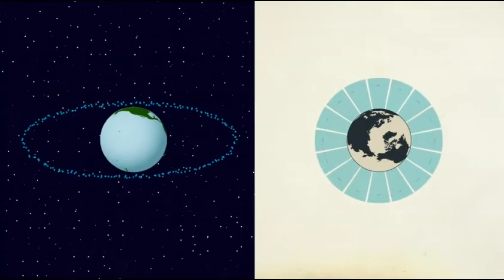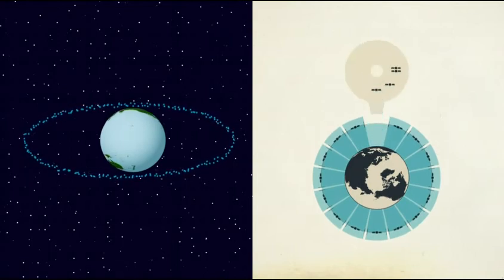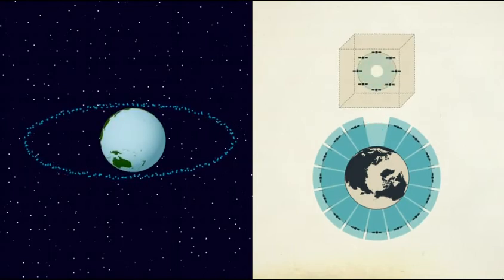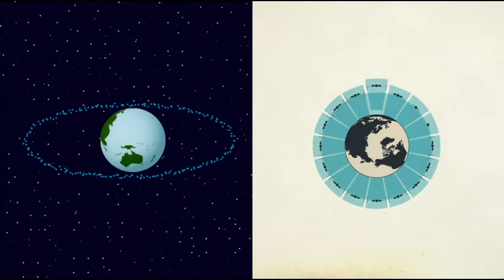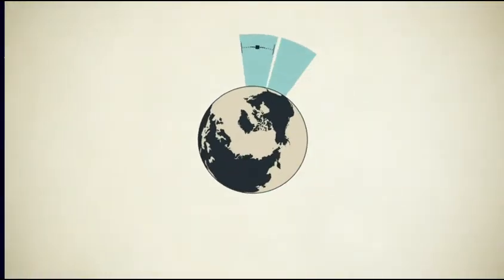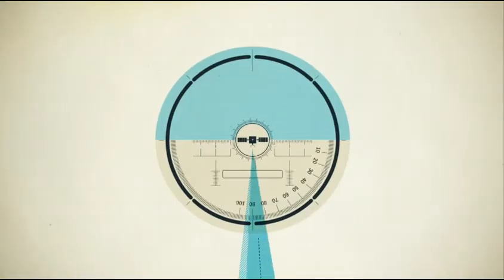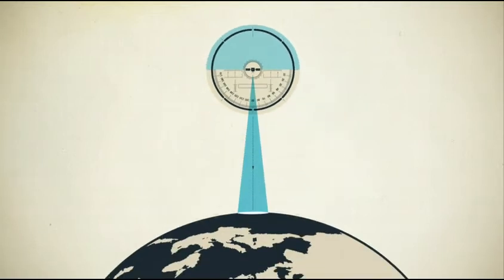Our entire satellite fleet consists of several orbital slots with as many as eight satellites in each. Each satellite has between 1,000 and 5,000 parameters that must be monitored and controlled from the ground.